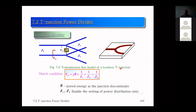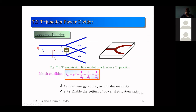Turning to practical three-port networks: for a lossless divider, one of the three conditions must be relaxed. In this case, the matching condition is relaxed, since all three ports cannot be simultaneously matched while keeping the network lossless and reciprocal.